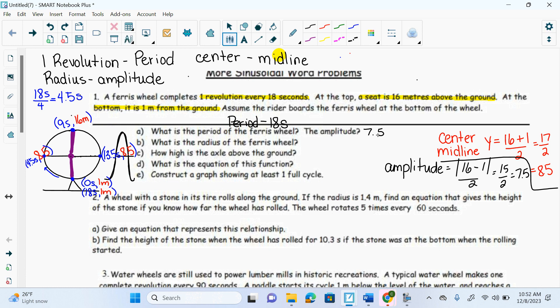What is the radius? What's another word for amplitude? Radius. What's another word for radius? Amplitude. They're the same thing. Trick question. How high is the axle above the ground? What's that asking for? The center of the circle. Where's the center at? 8.5, the midline.